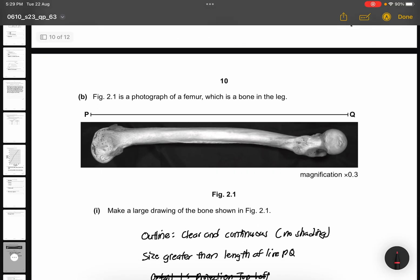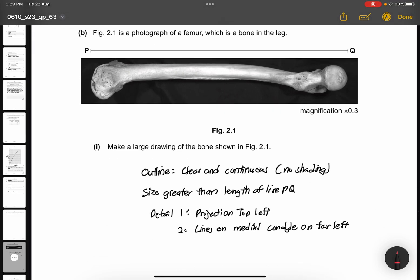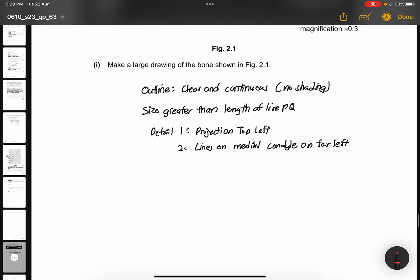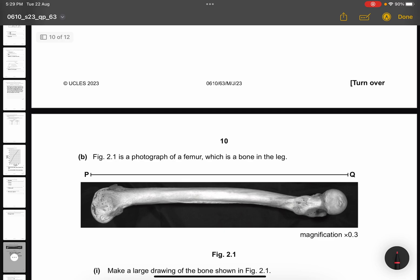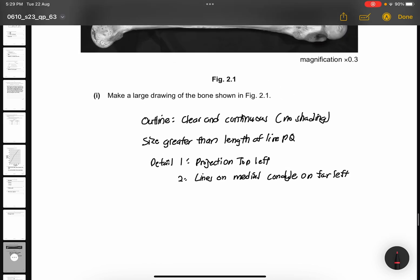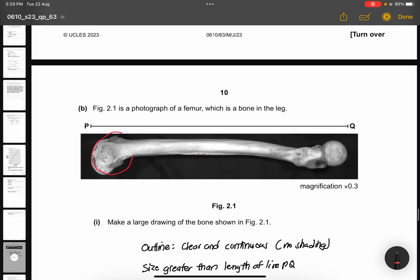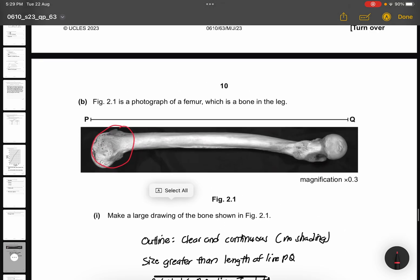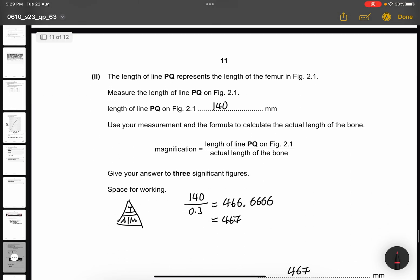Part B. Figure 2.1 is a photograph of a femur, which is a bone in the leg. Part 1. Make a large drawing of the bone shown in figure 2.1. So, how do you get 4 marks? It's by making sure you're having clear and continuous lines. No shading. The size is greater than the length of line P and Q, which is here to here. And then, detail 1 is the projection of top left. So, it means make sure you must draw this. And then, lines on the medial condyle on the far left. Make sure you're having both of them.